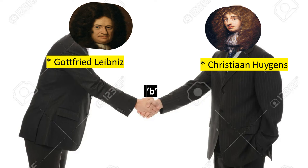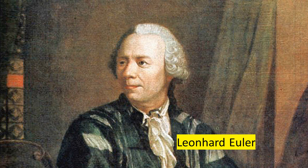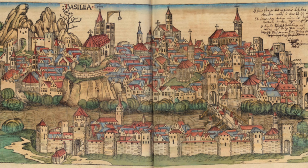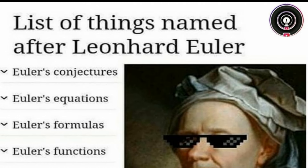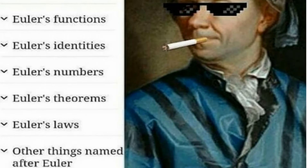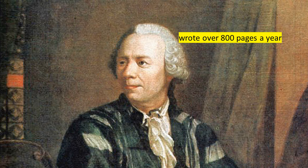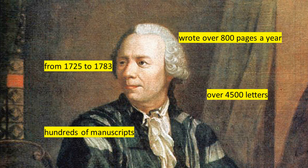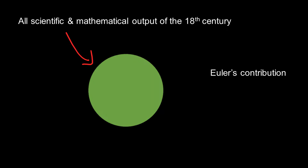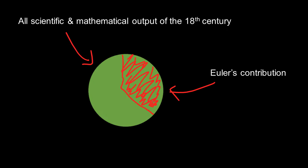The constant E became popular when Leonard Euler came into the picture. Leonard Euler was a Swiss mathematician who studied at the University of Basel, the same university at which Jacob Bernoulli studied. He contributed heavily to mathematics, working in many areas such as geometry, trigonometry, algebra, number theory, infinitesimal calculus, continuum physics, and lunar theory. Euler's work averaged 800 pages a year from 1725 to 1783, and he also wrote over 4,500 letters and hundreds of manuscripts. It has been said that Euler was responsible for a third of all the scientific and mathematical output of the 18th century.